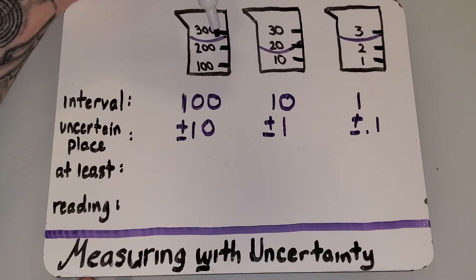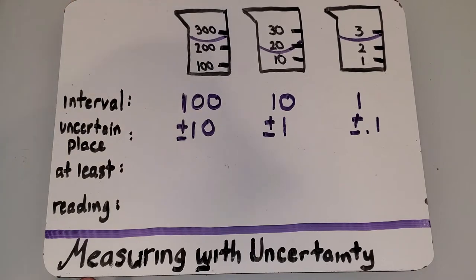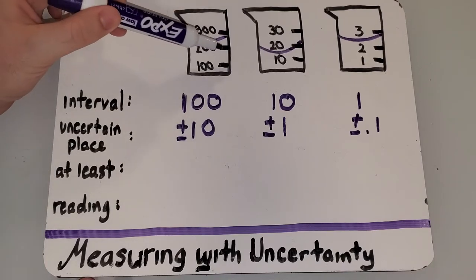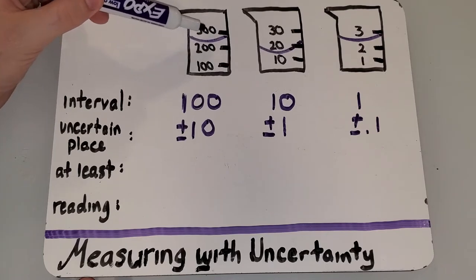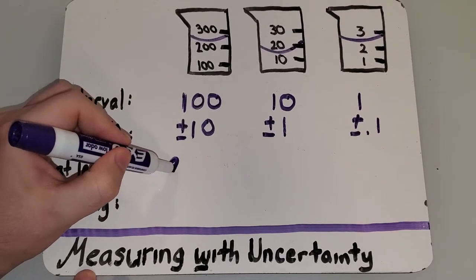So, for this, let's ask ourselves, what is this measurement? At least, no estimation, no guessing. Well, it's above the 200 line, but it's below the 300 line. So, we're going to say it's at least 200.